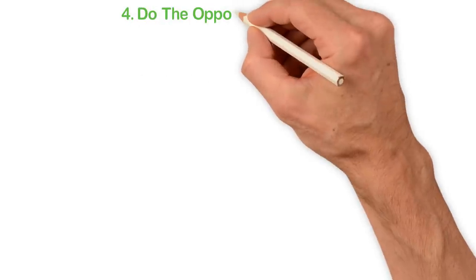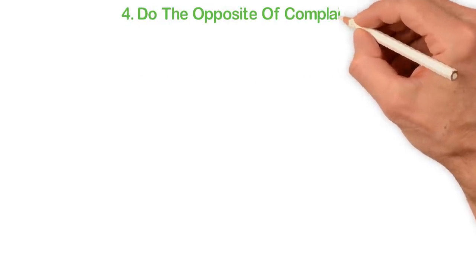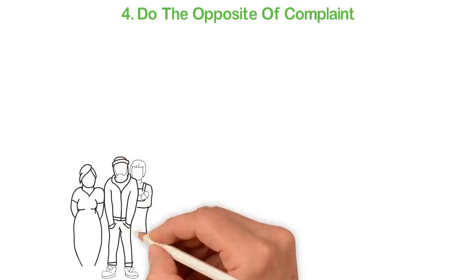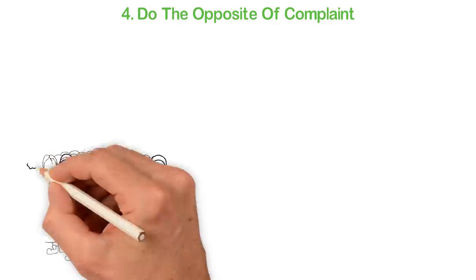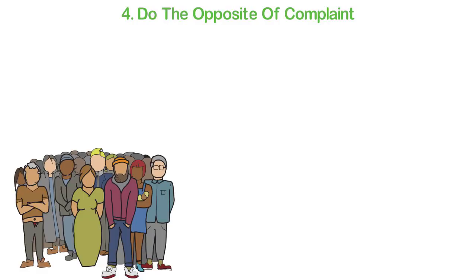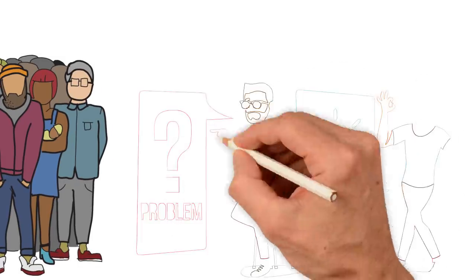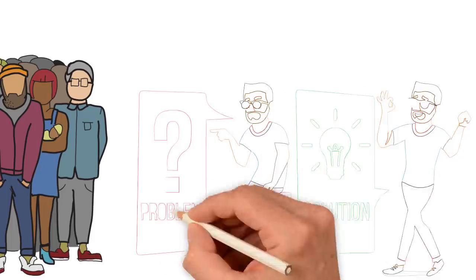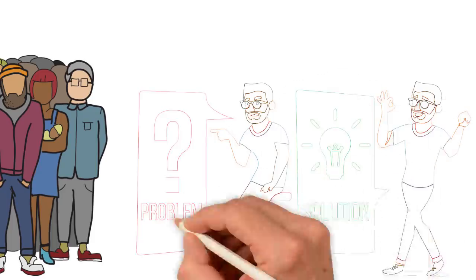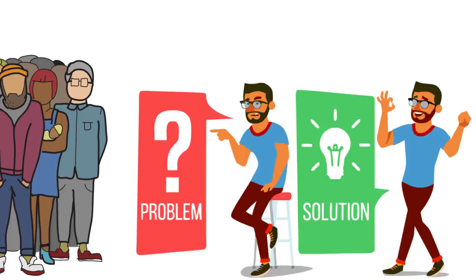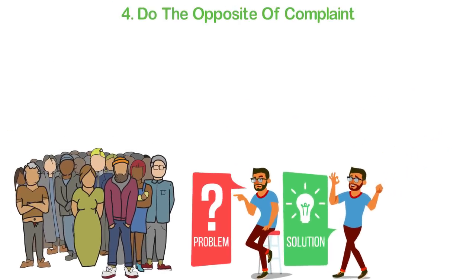Fourth, do the opposite of complaint. Everywhere you look in the world, you're going to see everyone complaining about everything. That's what we're trained to do because that's the easiest thing to actually do. Who on earth cannot open his mouth and complain about anything? What most people cannot do is work towards solutions because this is a lot of work. Unfortunately, that's what you have to do.